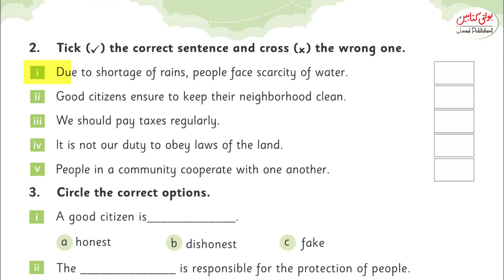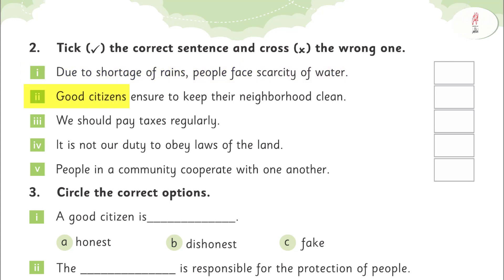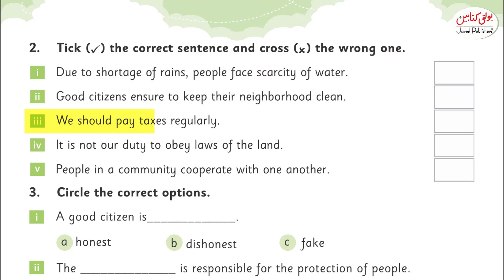Due to shortage of friends, people face scarcity of water — tick. Good citizens ensure to keep the neighborhood clean — tick. We should pay taxes regularly — tick. It is not a duty to obey the laws of the land — cross.